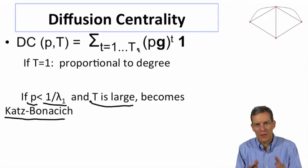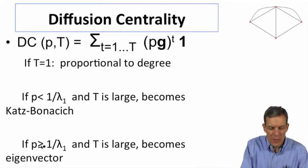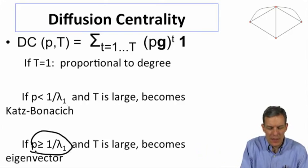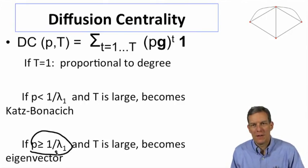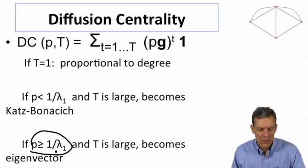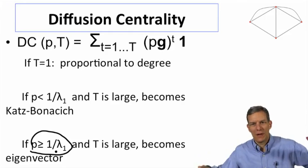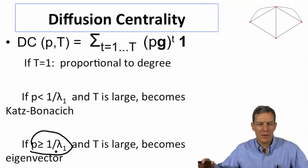So this is sort of like doing Bonacich centrality but with a finite T. In contrast, if P is larger, so if it's larger than the 1 over the eigenvalue, then as T becomes large, this begins to approximate eigenvector centrality. So this is a measure which for large T can look either like eigenvector or some variation of Bonacich centrality.